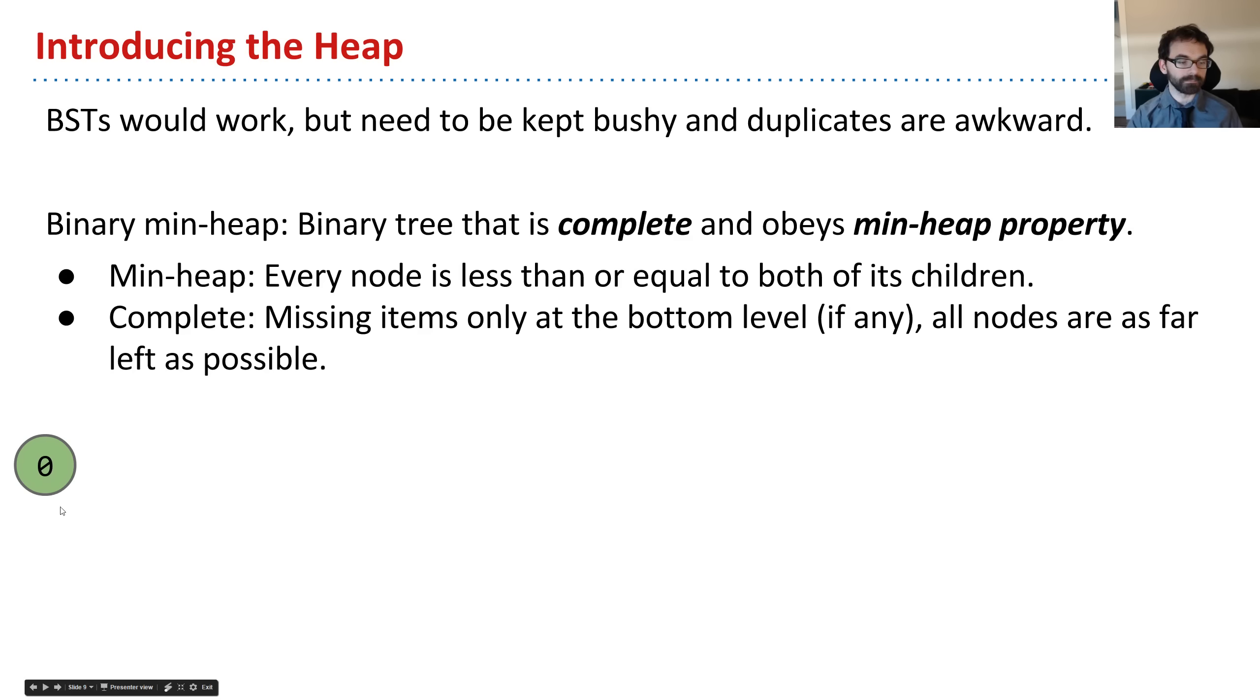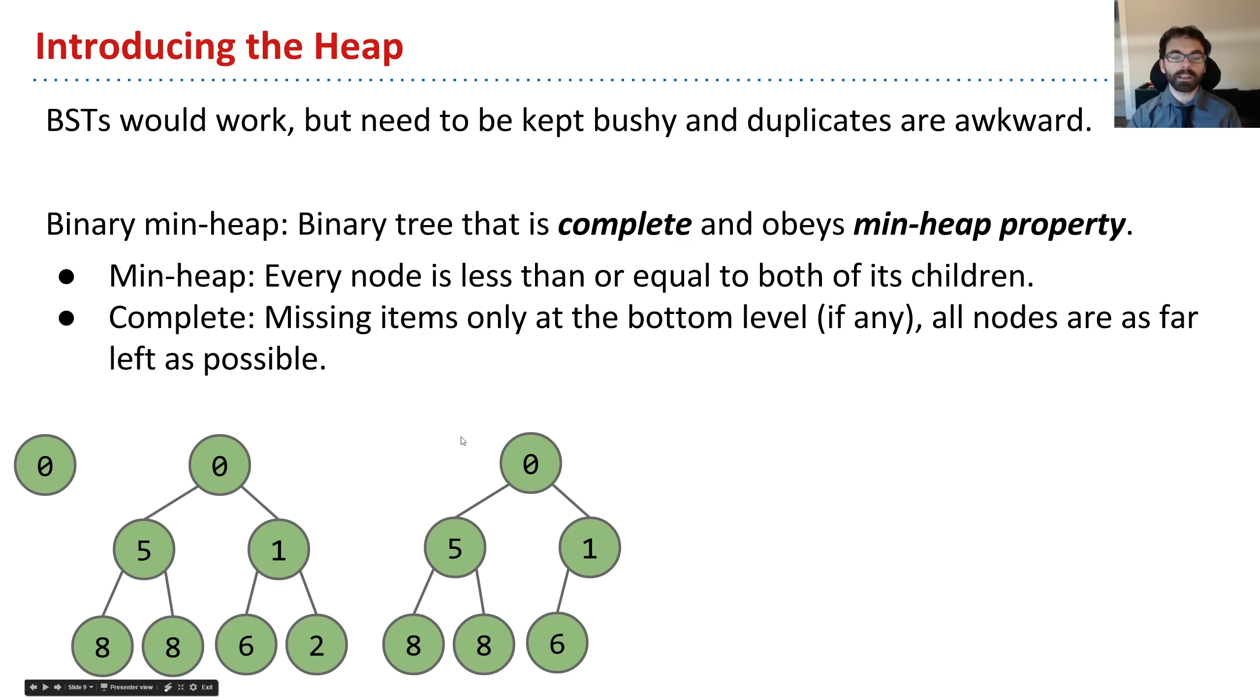Here we have a tree that is a binary min-heap, and every node is less than or equal to both of its children, and we're not missing any items at all, it's really bushy. Here's a tree that's great, wonderfully bushy, nothing's missing. There's no gaps. If you were a bird, you could safely land anywhere and feel great. And every item is less than or equal to both of its children. Here's a tree which is actually also a binary min-heap. It's not as wondrous as this one, but if you had to draw a tree that was as bushy as possible that only had six elements, this is what it would look like. In that sense, it's complete.